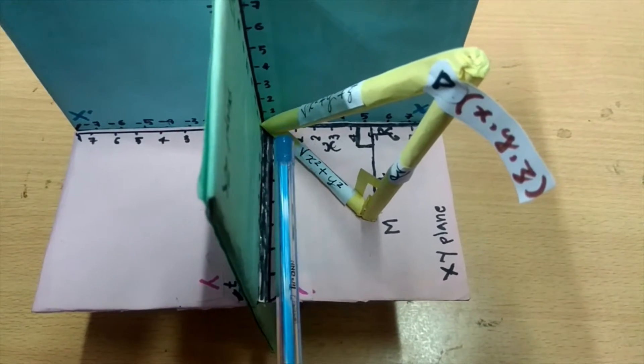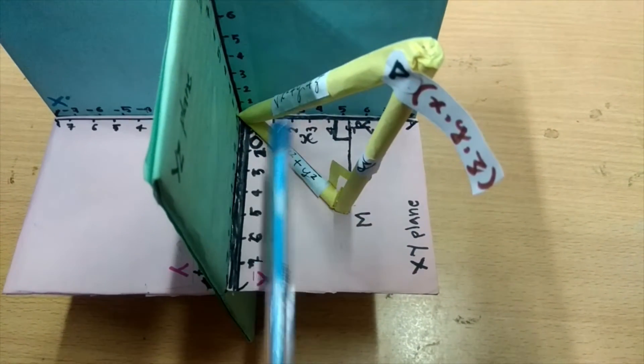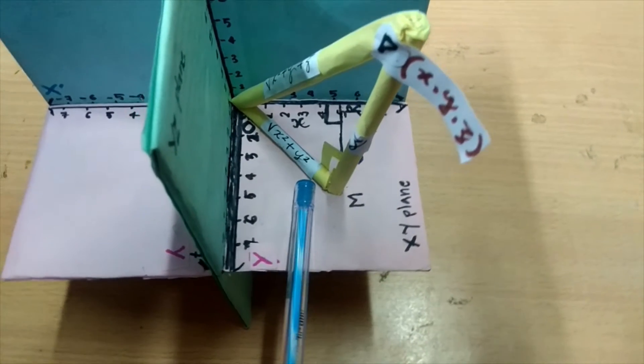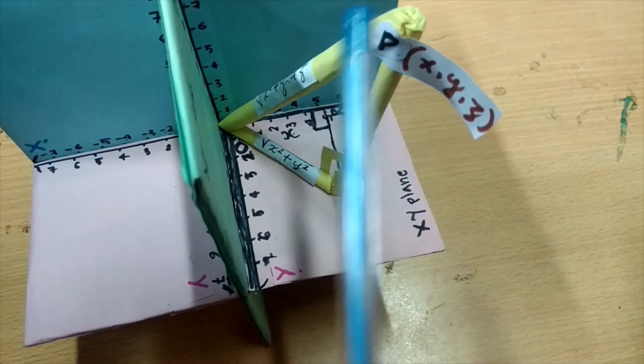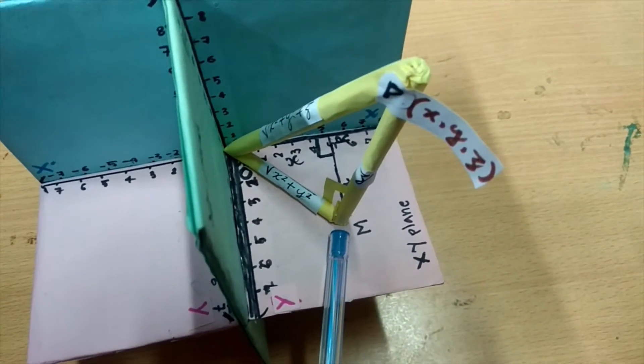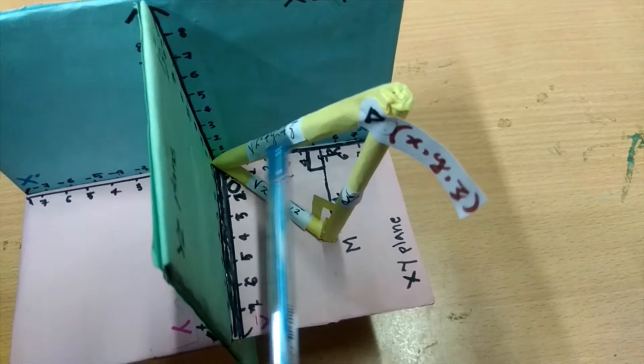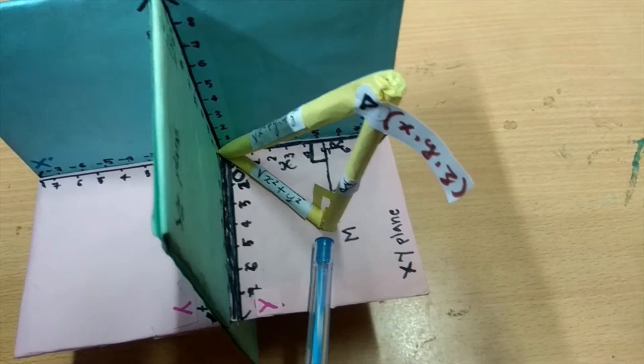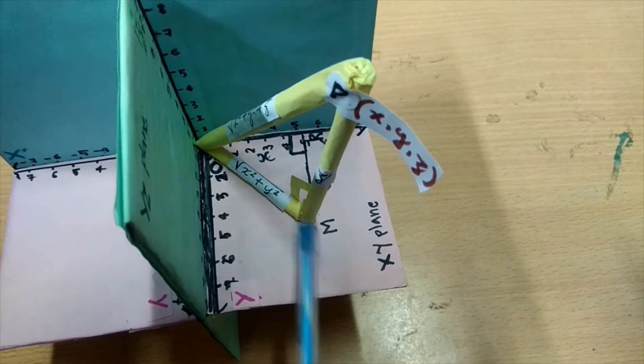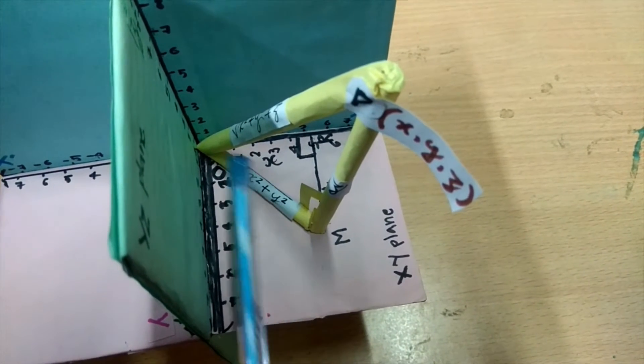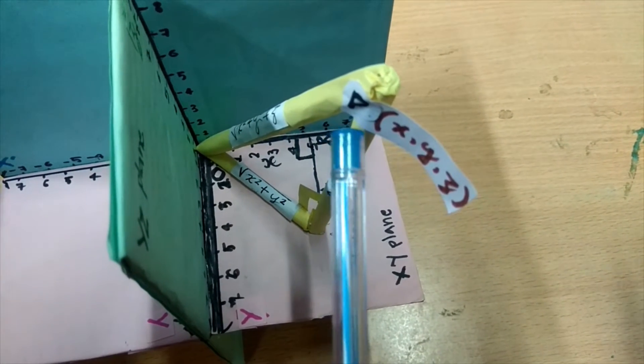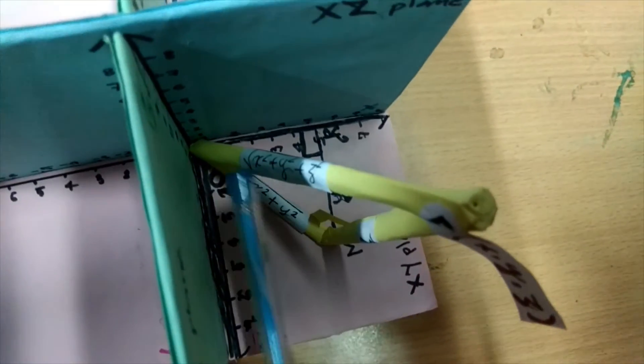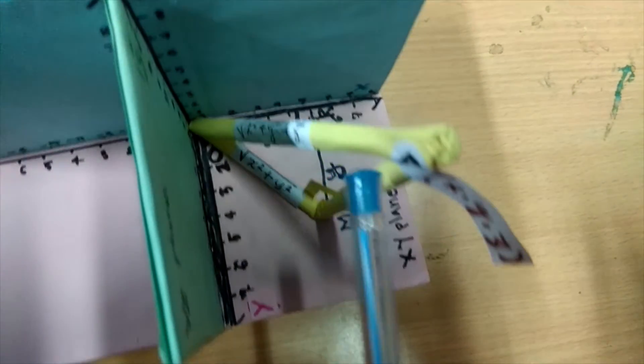Again, OPM is also form of right angle triangle. OM is under root X square plus Y square, so PM is equal to Z. We know that Pythagoras theorem is hypotenuse square is equal to perpendicular square plus base square. So OP square is equal to OM square plus PM square. OP square is equal to X square plus Y square plus Z square. OP is equal to under root X square plus Y square plus Z square.